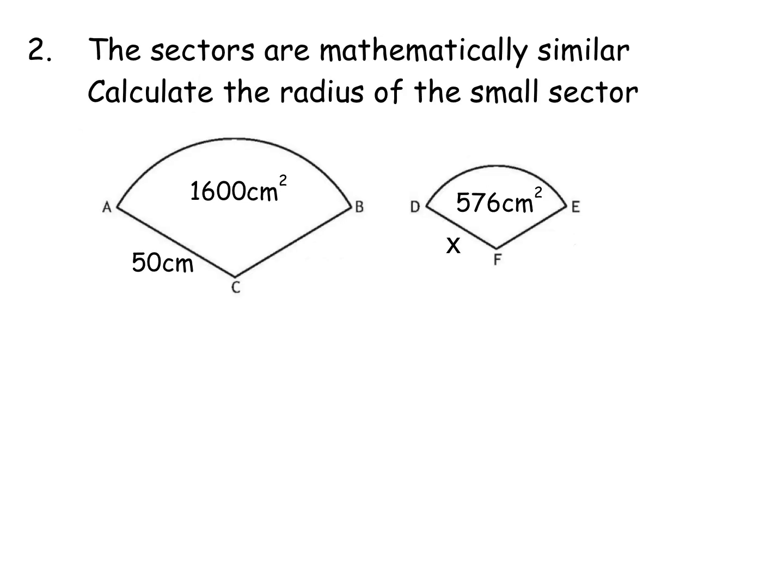Okay, the second one is very similar. We're told that these sectors are mathematically similar, calculate the radius of the small sector. So we've called the unknown x here, you can call it r if you want still. And again, I'm going to use the exact same approach.